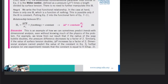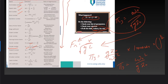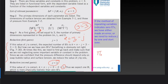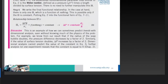Looking at established non-dimensional parameters, we note that the Weber number is defined as We = ρV²·L / σ. In our problem, the established non-dimensional parameter most similar to Pi₁ is the Weber number. Since our Pi₁ is already ΔP·r / σ, there is no need to further manipulate it.